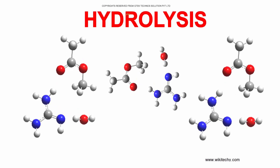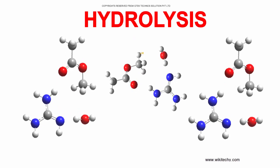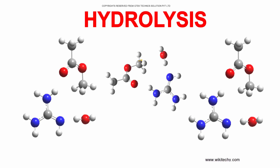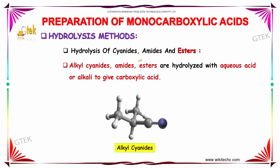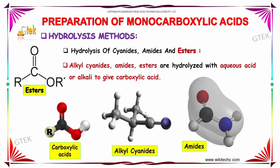Now, let us study about the hydrolysis of carboxylic acids — specifically the hydrolysis of cyanides, amides, and esters. Alkyl cyanides, amides, and esters are hydrolyzed with aqueous acid or alkali to produce carboxylic acids.